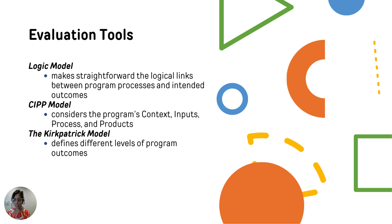The logic model makes straightforward the logical links between program processes and intended outcomes. The CIPP model considers holistically the program's context, inputs, processes, and products. And the Kirkpatrick model defines different levels of program outcomes. We will discuss each of these separately.